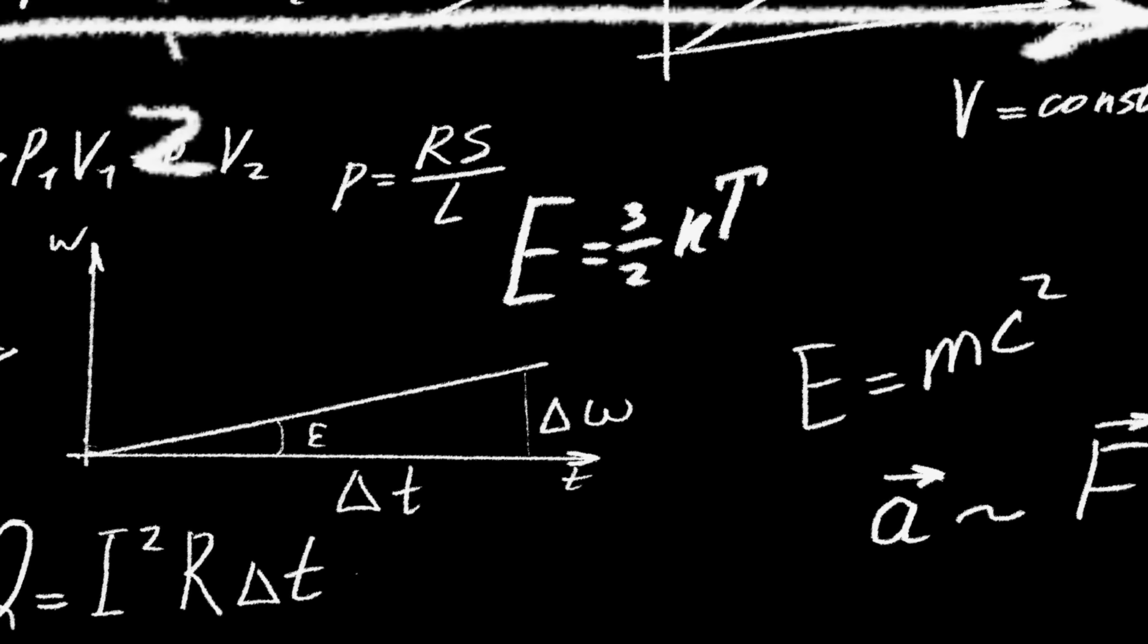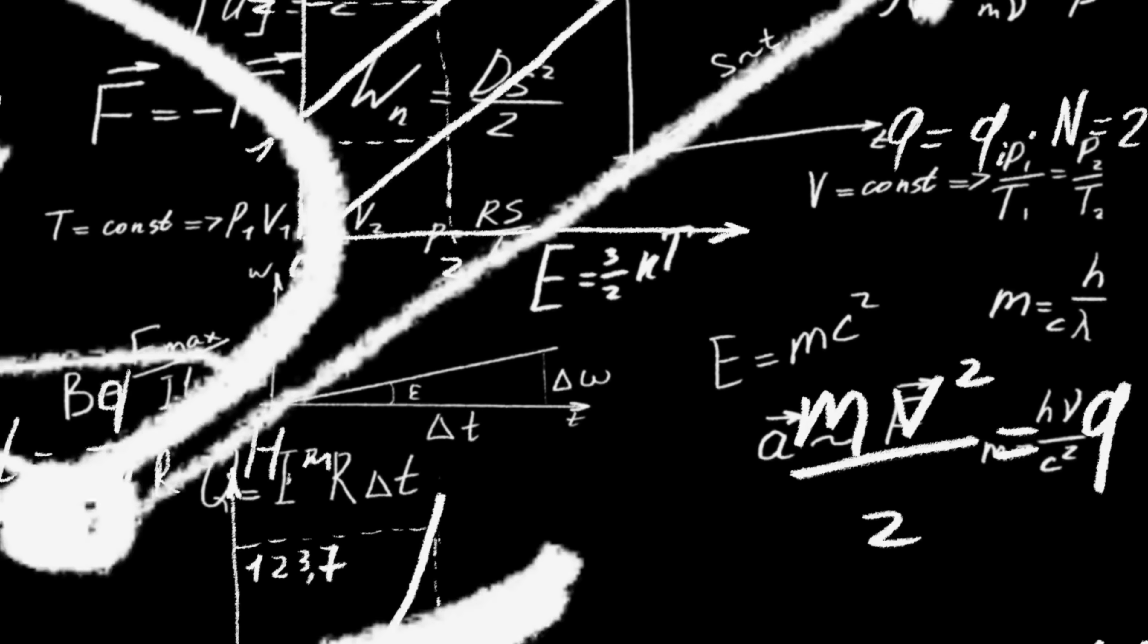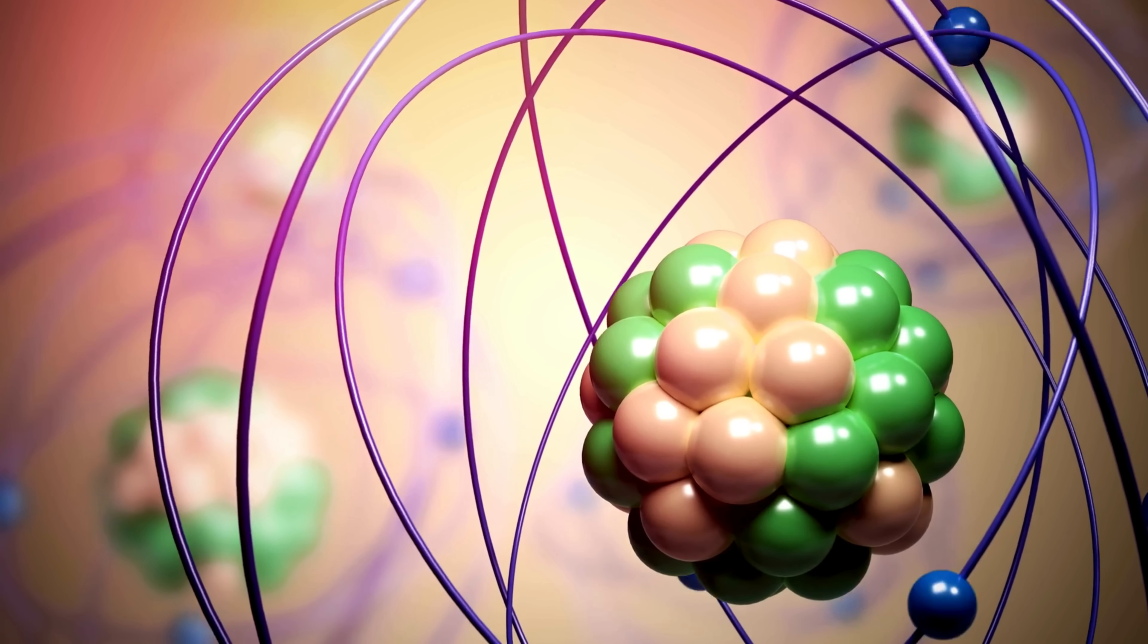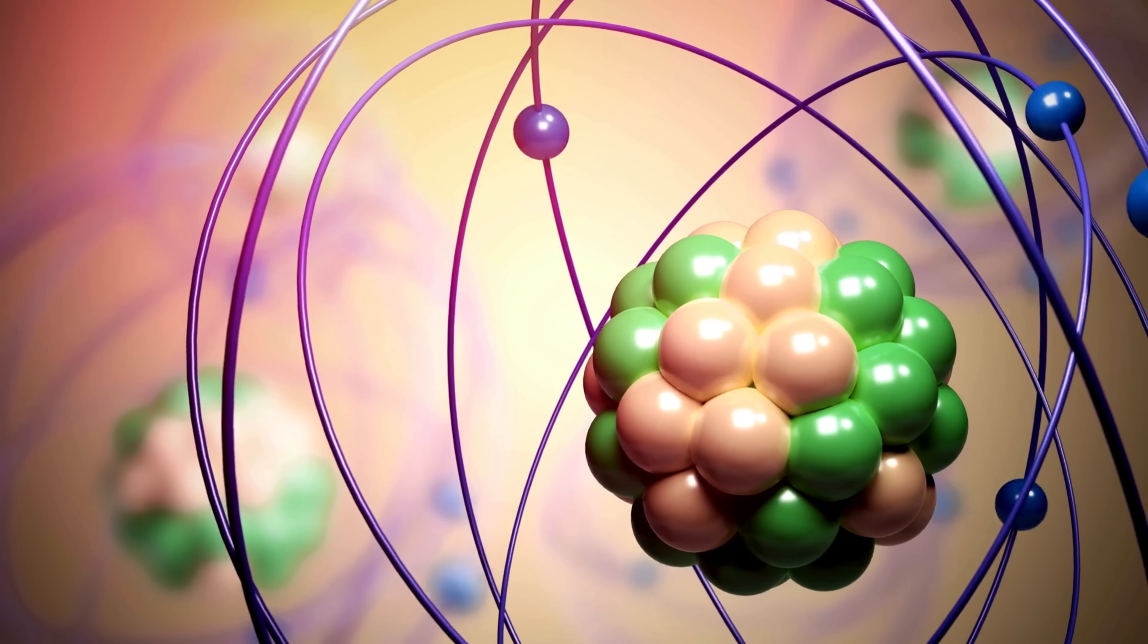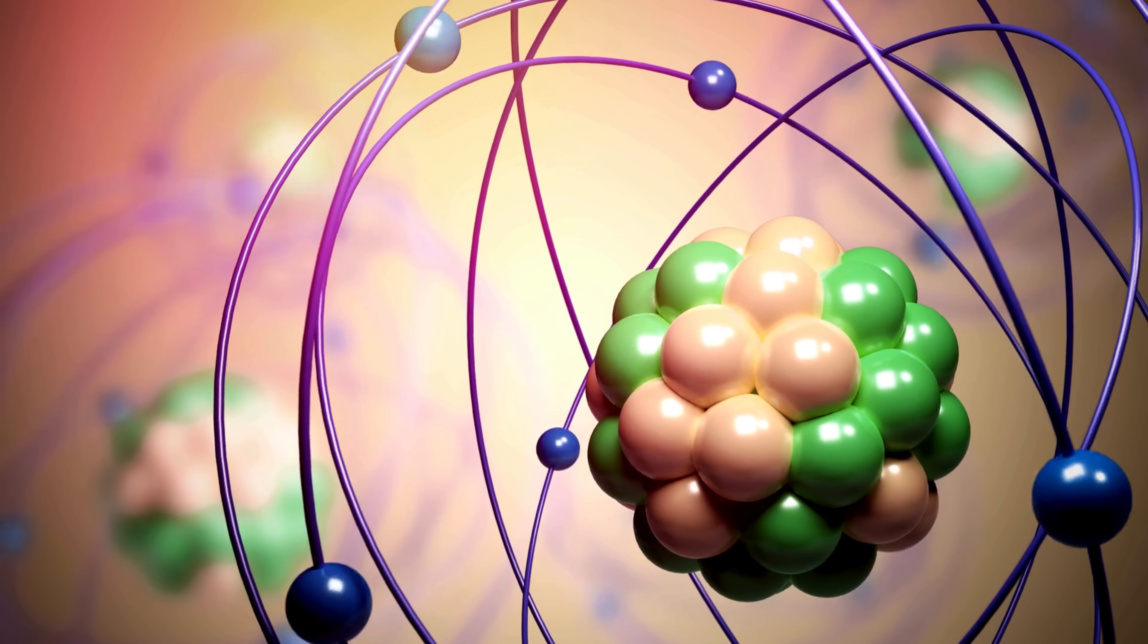And this explained atomic stability? Yes. Electrons in a quantized orbit wouldn't radiate energy continuously. They were stable, locked into their energy levels, until something caused them to transition.